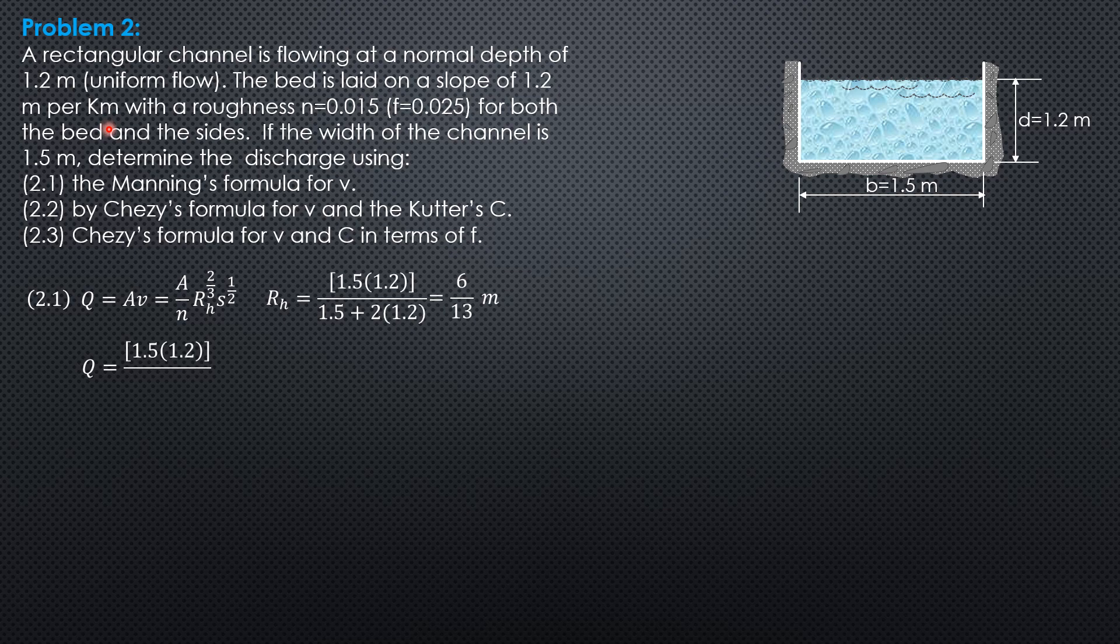So Q is 1.5 times 1.2 over 0.015, quantity 6 over 13 to the 2 thirds, then S 0.0012 to the 1 half. So the discharge is 2.483 cubic meter per second by Manning's formula.